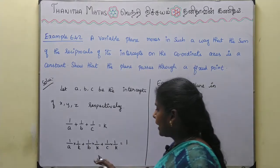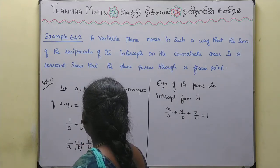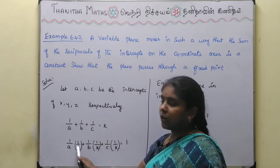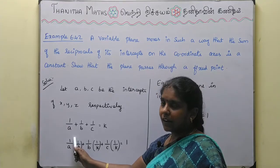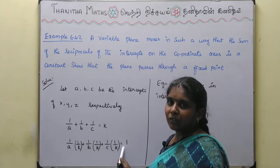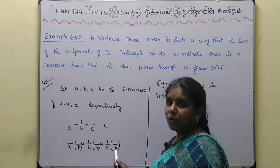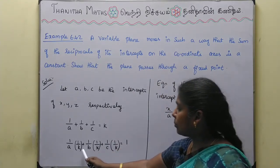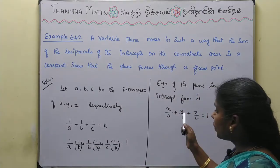Now let's compare. We take k into the bracket, dividing by 1/k. Looking at this: x/a where x is 1/k, so we have (1/k)/a + (1/k)/b + (1/k)/c = 1. That means x = 1/k, y = 1/k, and z = 1/k satisfies this equation. This equation will be satisfied when x, y, z all equal 1/k.